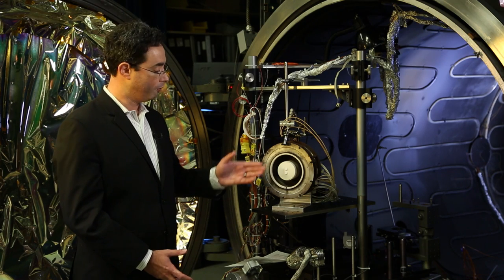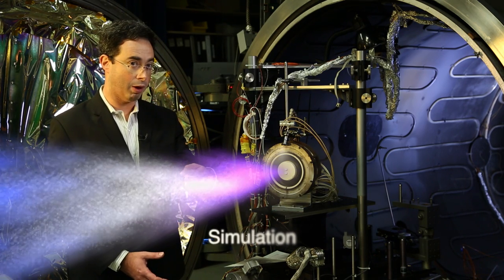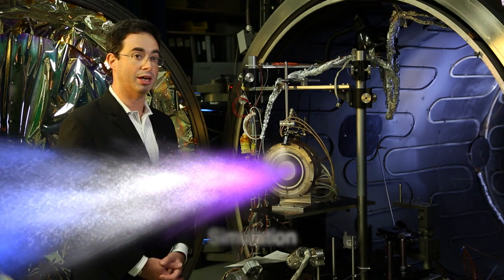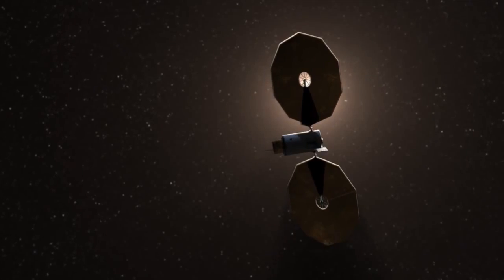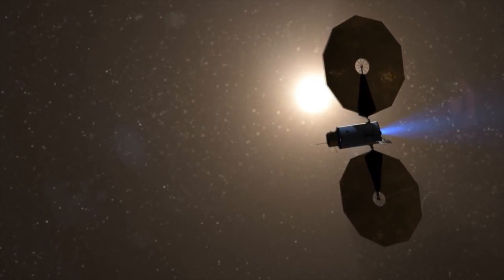Electric field will pull ions at a very high velocity in that direction away from the thruster, thus producing a force on the thruster in the opposite direction, creating thrust. The reason that it is important to have electric propulsion as a technology is because it can do something that chemical propulsion cannot do, which is to expel particles with much more energy per particle than you can ever get with chemical energy.